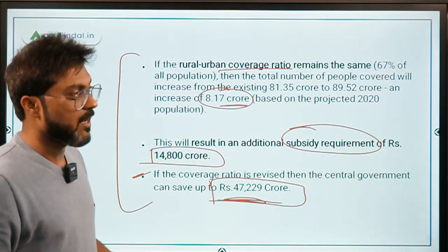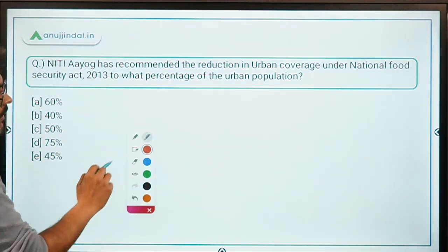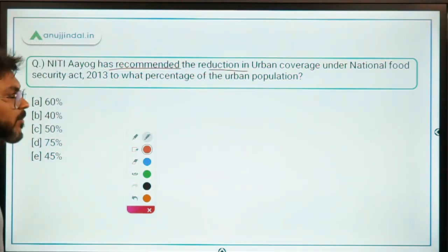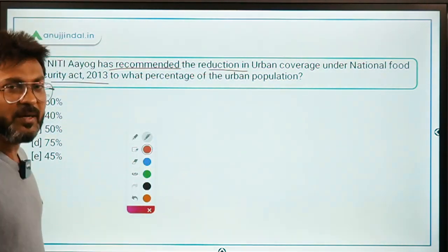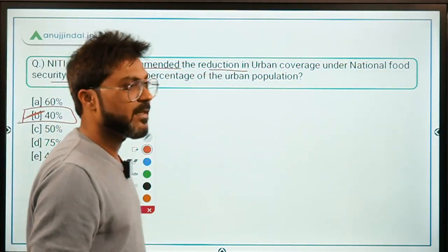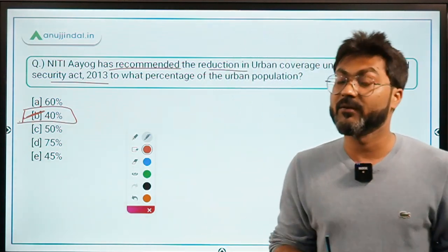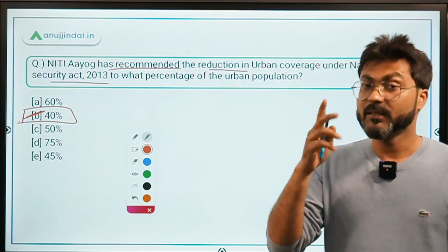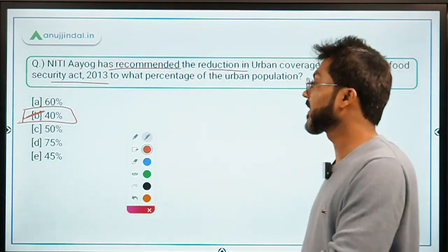Coming back to Question 1: NITI Aayog has recommended the reduction in urban coverage under the National Food Security Act to what percentage? The urban coverage should be reduced to 40% — option B is the correct answer — while rural should be decreased to 60%. This is a very important question that can be asked in the ESI section of RBI Grade B.